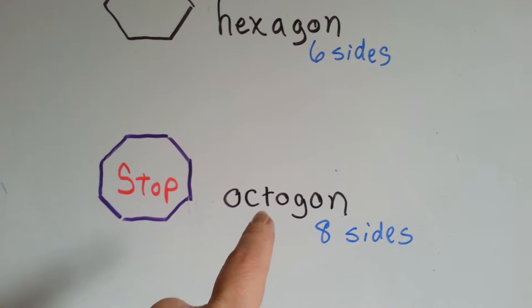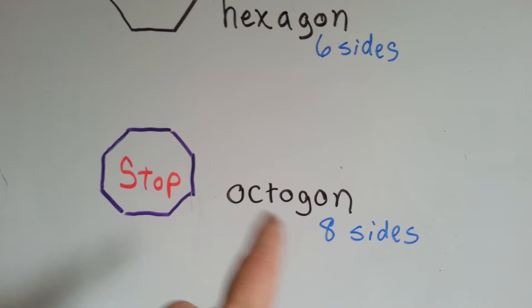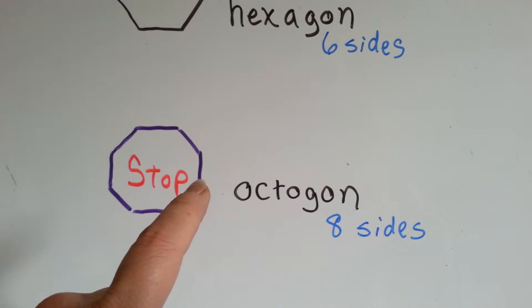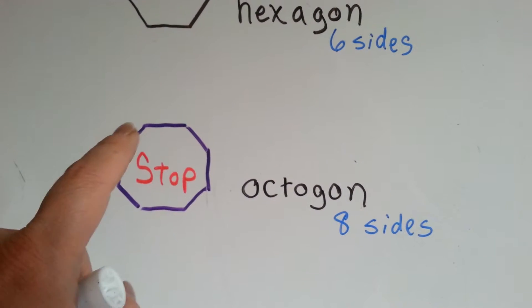Octo means 8, like an octopus has 8 legs or 8 arms. An octagon has 8 sides, like a stop sign.